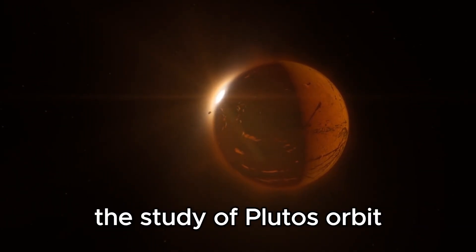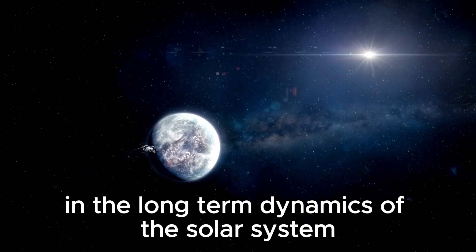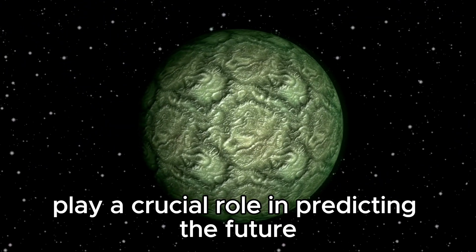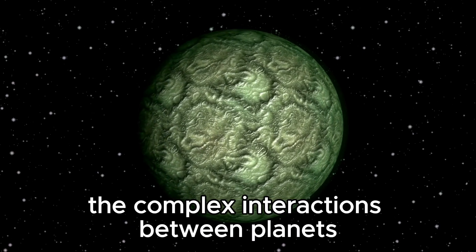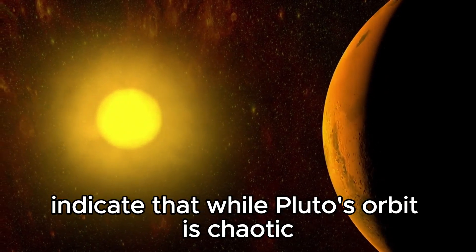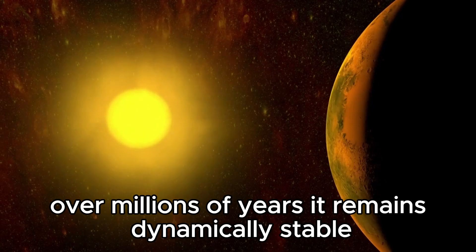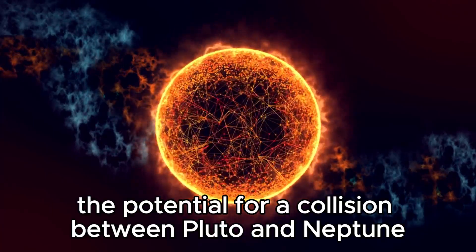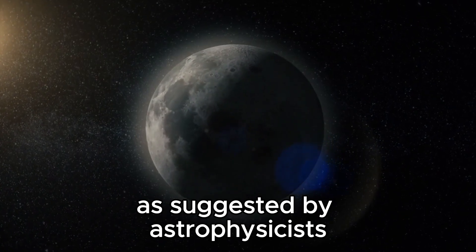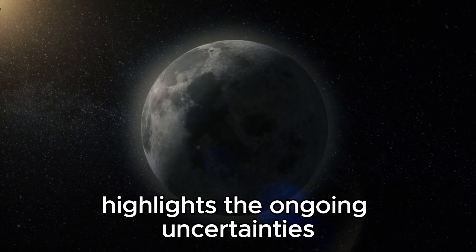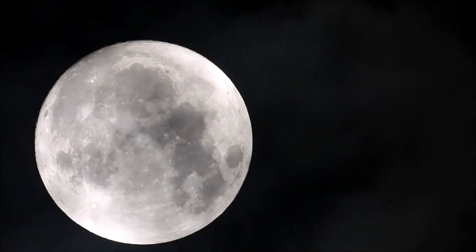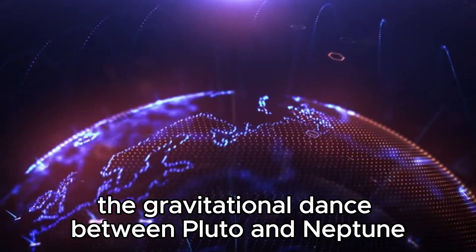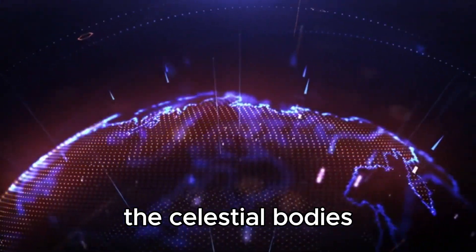The study of Pluto's orbit raises intriguing questions about the stability of planetary orbits and the long-term dynamics of the solar system. Numerical simulations and theoretical models play a crucial role in predicting the future paths of celestial bodies and understanding the complex interactions between planets. These simulations indicate that while Pluto's orbit is chaotic over millions of years, it remains dynamically stable within the broader framework of the solar system's gravitational field. The potential for a collision between Pluto and Neptune, as suggested by astrophysicists Neil deGrasse Tyson and Michio Kaku, highlights the ongoing uncertainties and complexities in planetary dynamics.